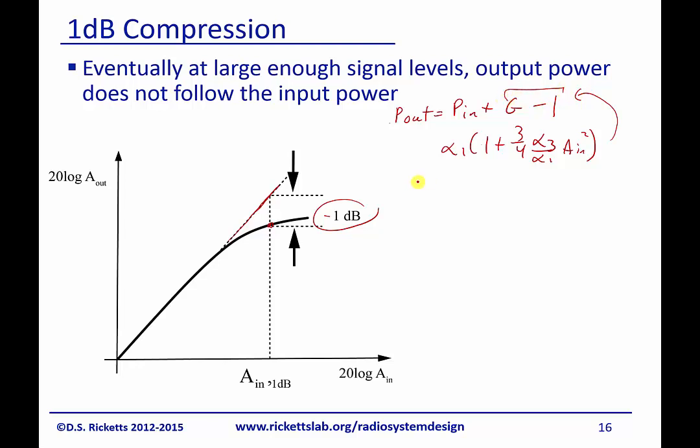Well, if I take 20 log of this, I'm going to get 20 log of alpha_1 plus 20 log of, okay, I'm going to get 20 log of 1 plus 3 quarters alpha_3 over alpha_1 times A_in squared, right?